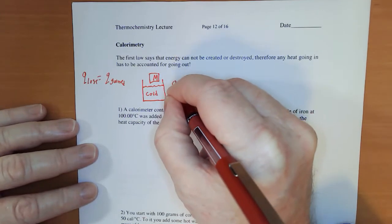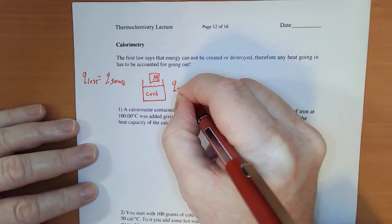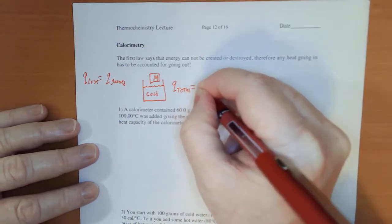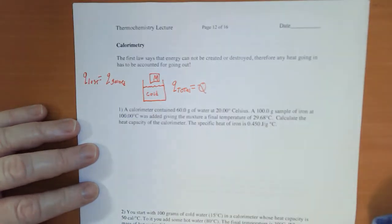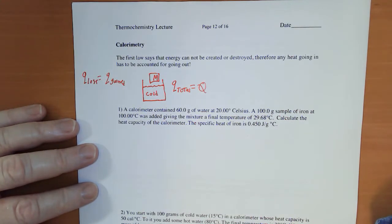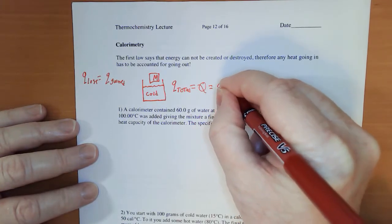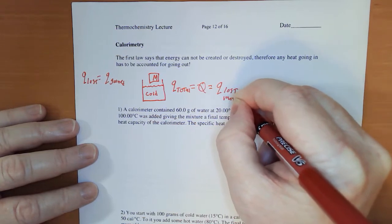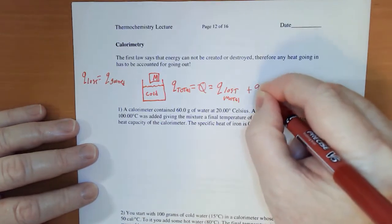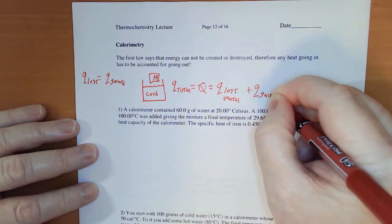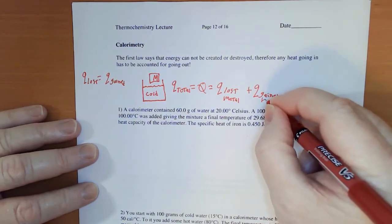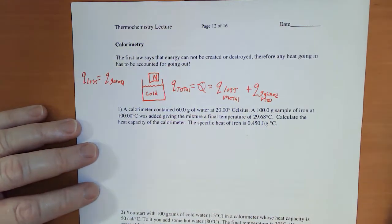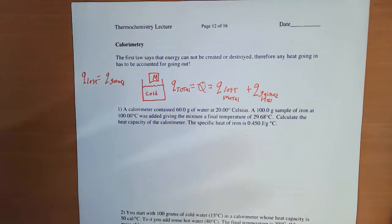In terms of the first law, Q total is going to equal zero. All the heat that's lost will equal heat that is gained. That equals Q lost by the metal plus Q gained by the water.